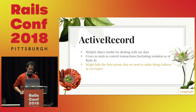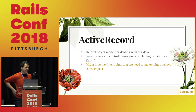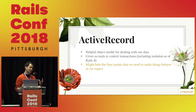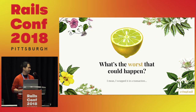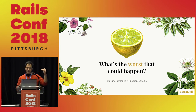Active Record is awesome — it gives us a really helpful object model for dealing with our data, and it even gives us some controls for transactions. We can start a transaction, we can roll back a transaction, and as of Rails 4 we can even control the isolation level, which is super helpful. Unfortunately it might hide some of the finer points about what's going on with the database that we need to know to make our code behave like we expect. Many of you may have used transactions — you take a block of code that should have those ACID properties and wrap it in an Active Record transaction block.